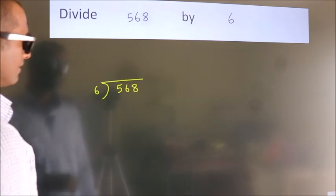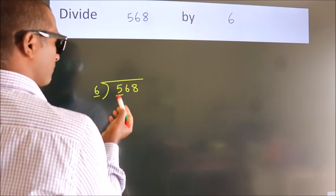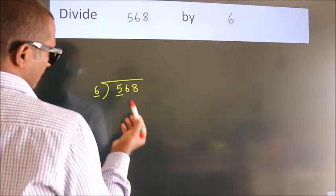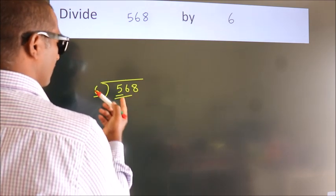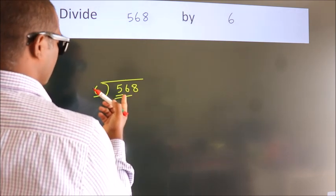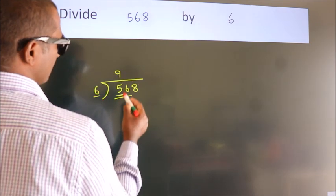Next, here we have 5, here 6. 5 is smaller than 6, so we should take two numbers, 56. A number close to 56 in the sixth table is 6 nines, 54.